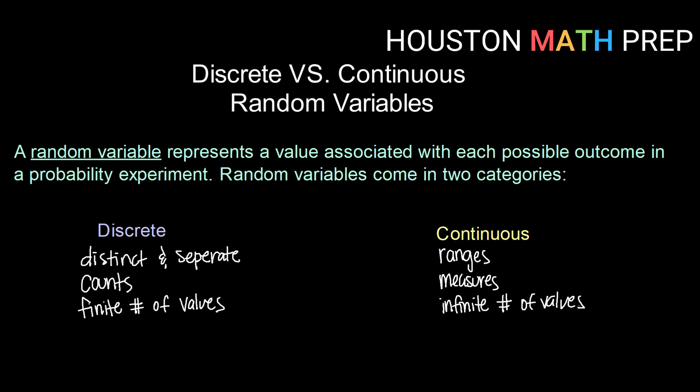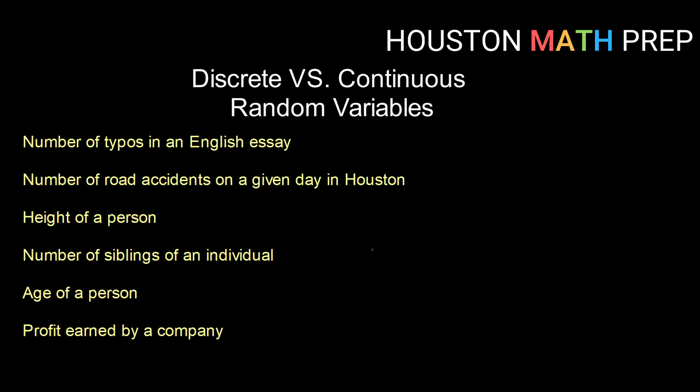Like I said, the rules for working with discrete random variables are a little bit different than working with continuous random variables. So let's practice looking at some categories and trying to determine, are these discrete or are they continuous? Alright, so here's a list of random variables that we might get from a probability experiment. So let's determine with each one, does it represent a discrete or continuous scenario?